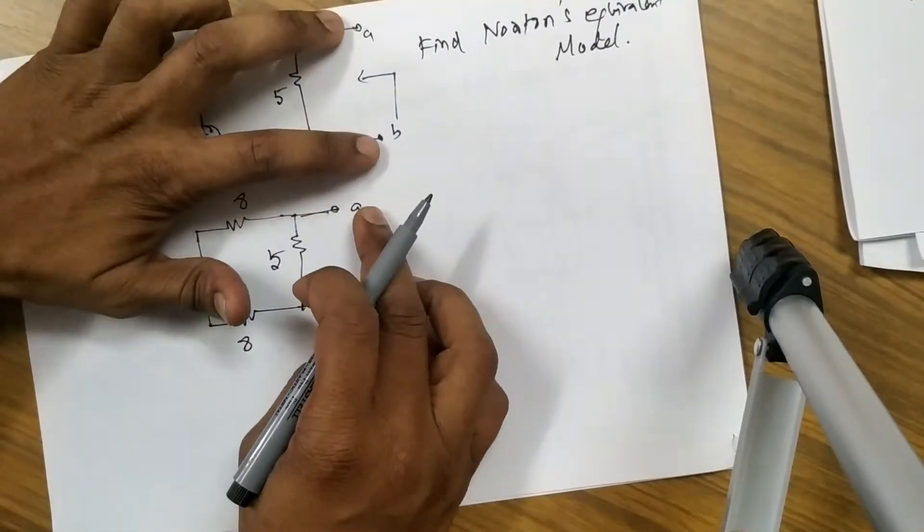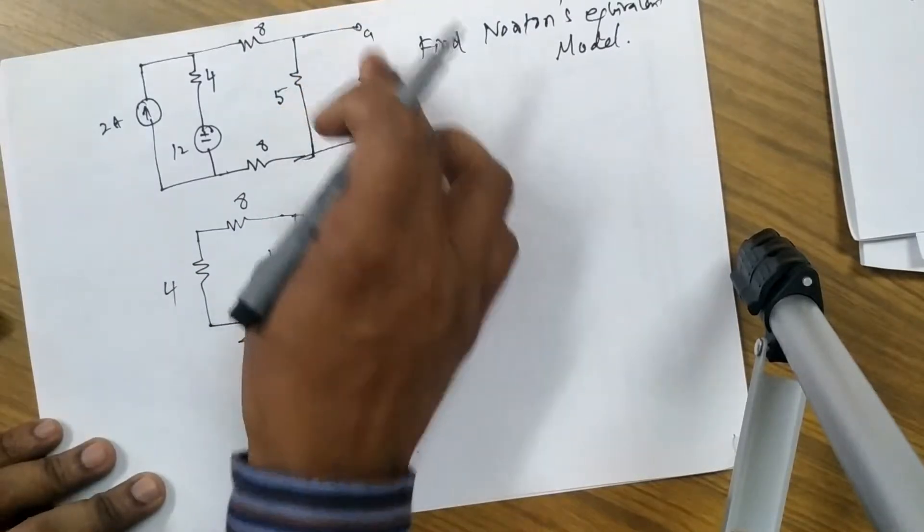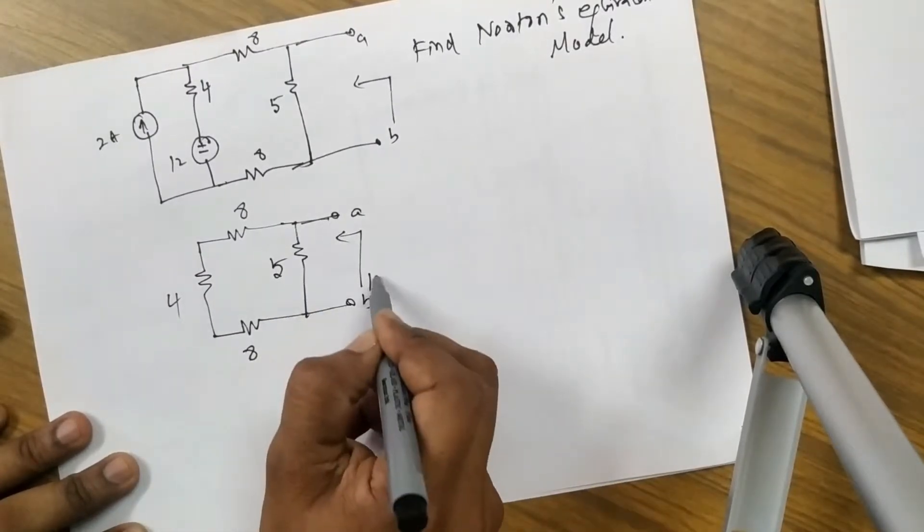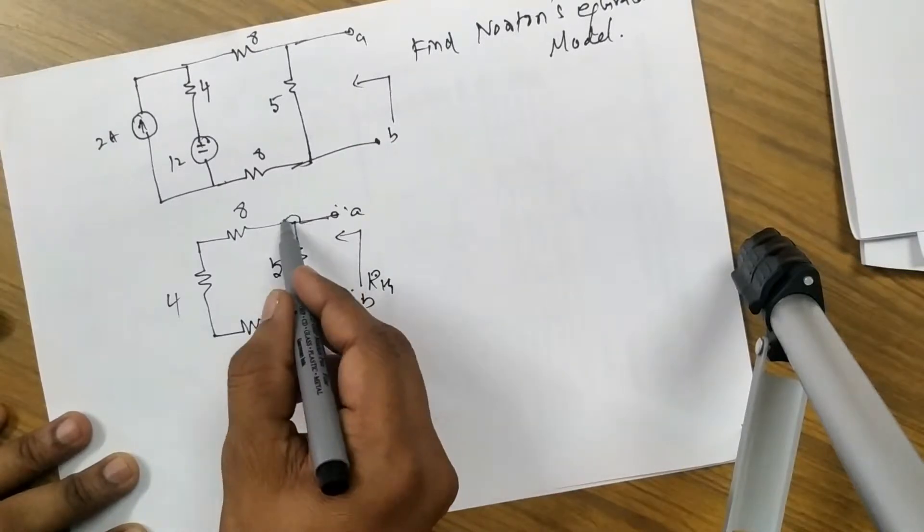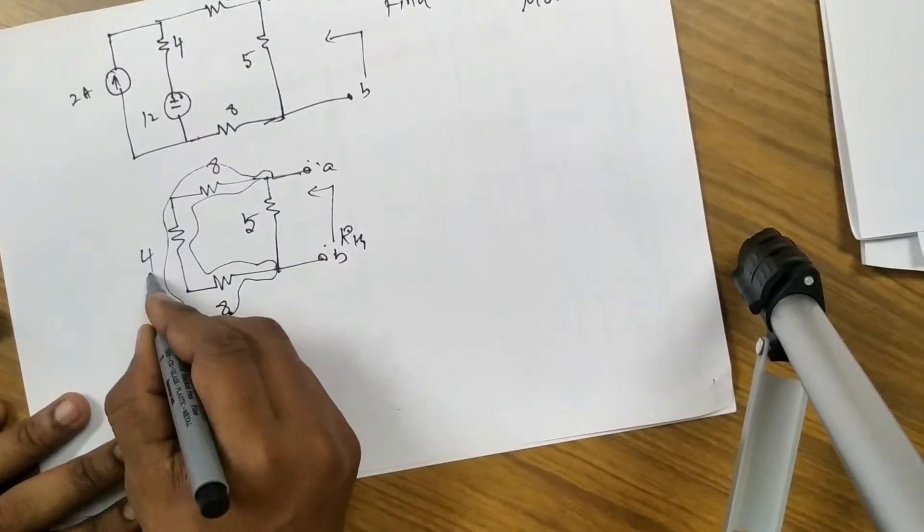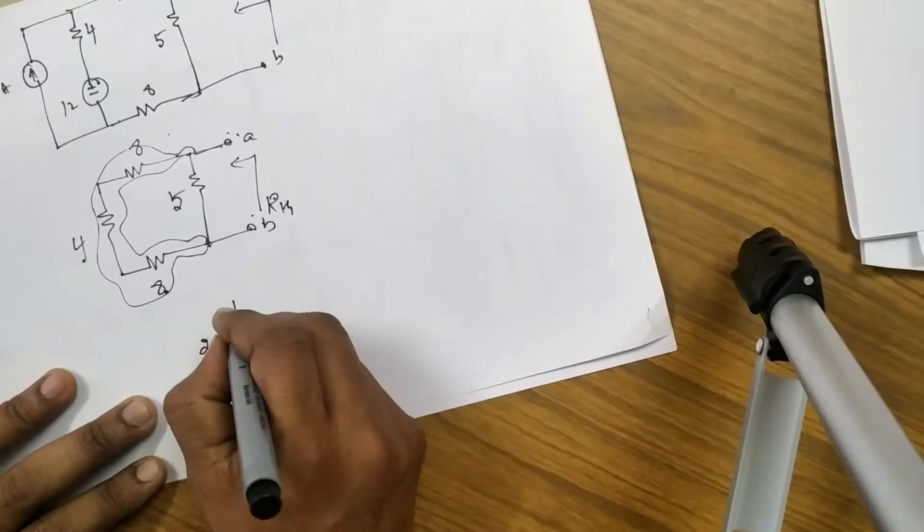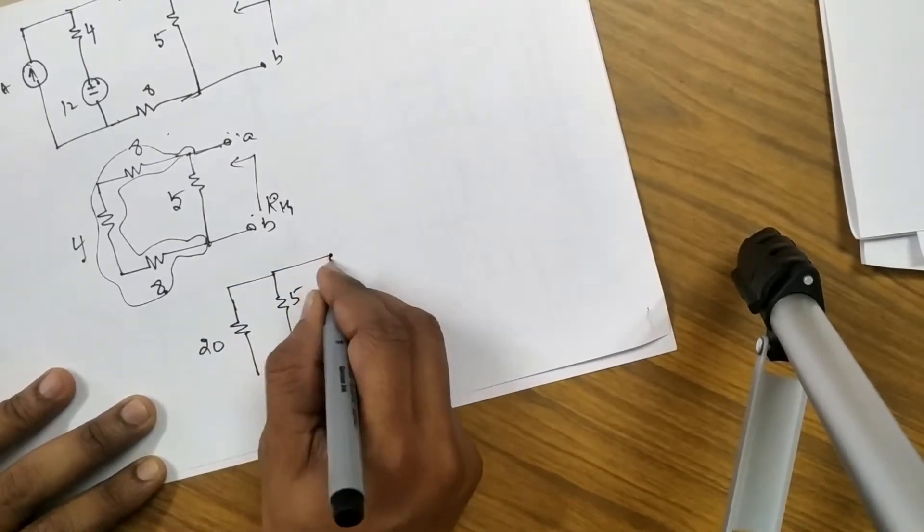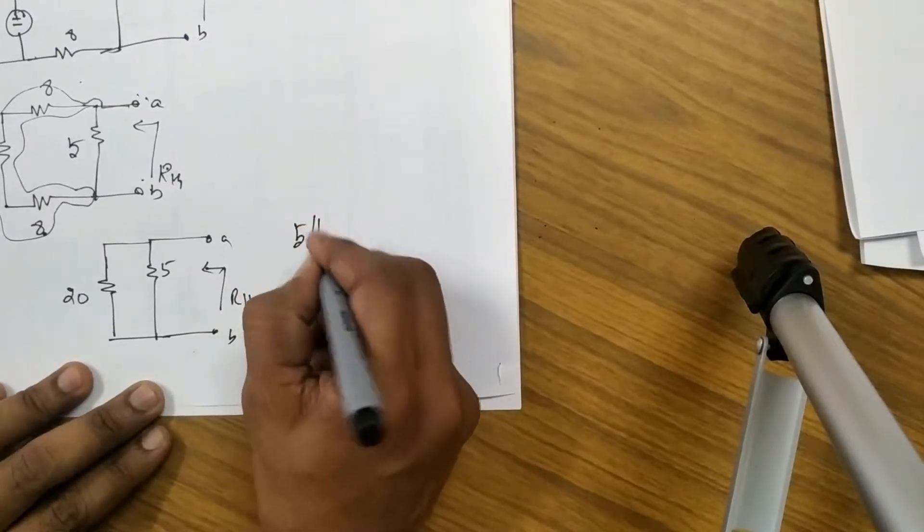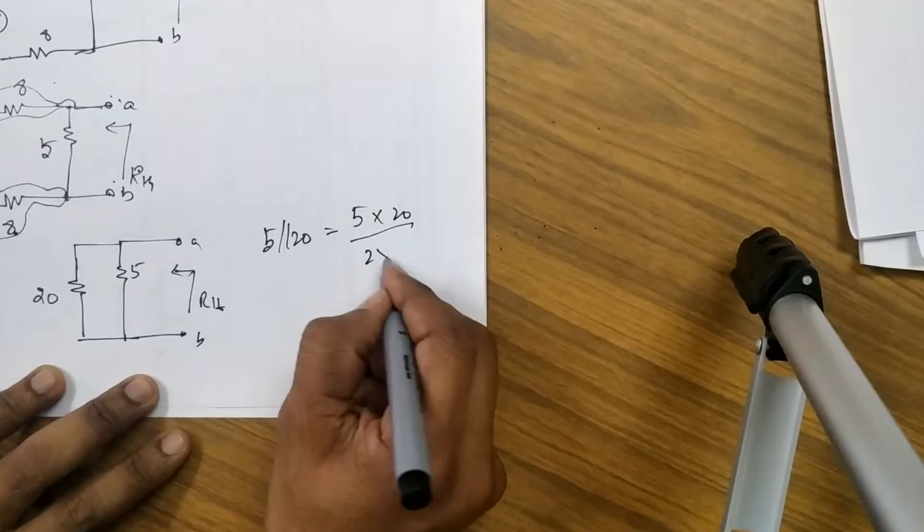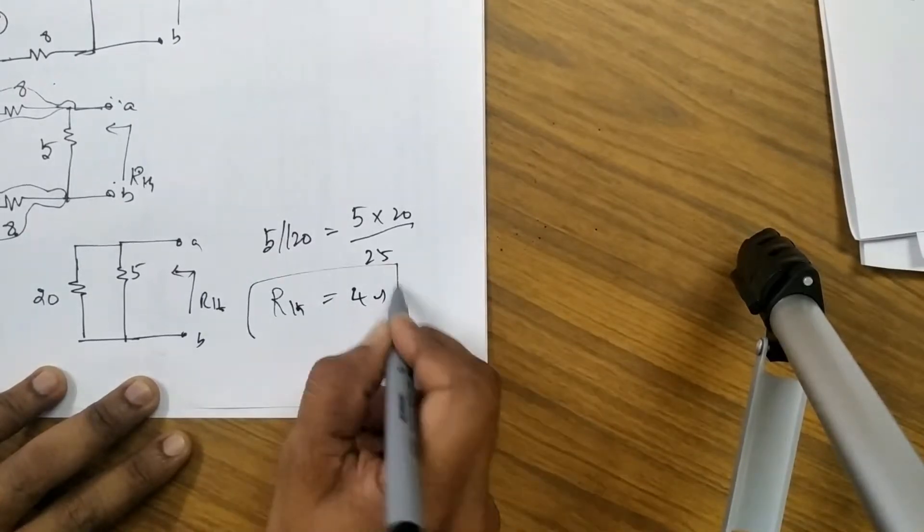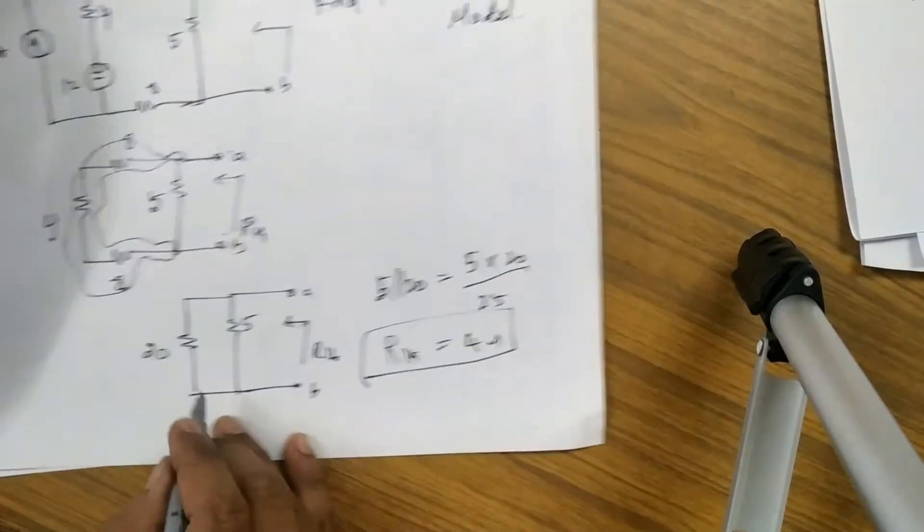See in the problem itself they have given the load term and it is A and B, so we don't need to bother about what is the load point. Now, we want to find out Rth at A and B, so these three are connected one after another, so they are in series connection, 8 plus 4 is 12, 12 plus 8 is 20 and 5 ohms parallel 20 you will get, I guess 4 it is, 100 by 25 is 4. So Rth is 4 ohm.